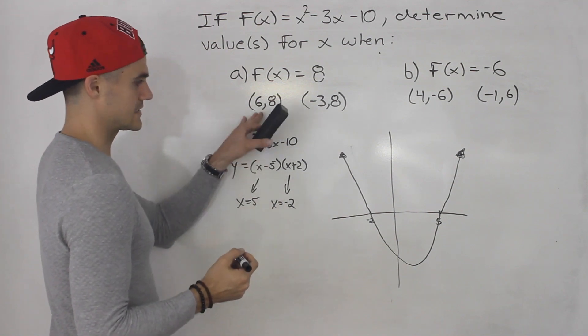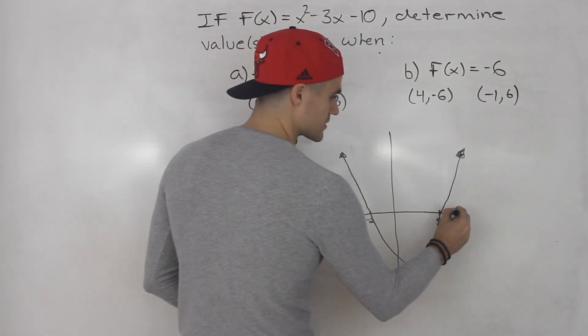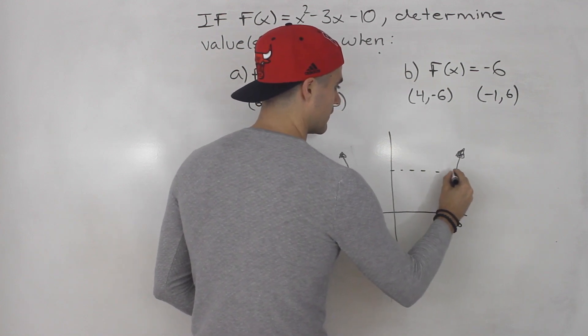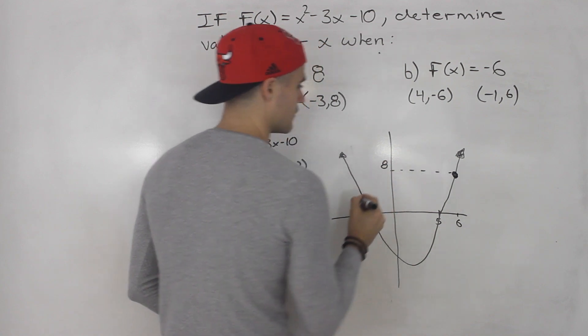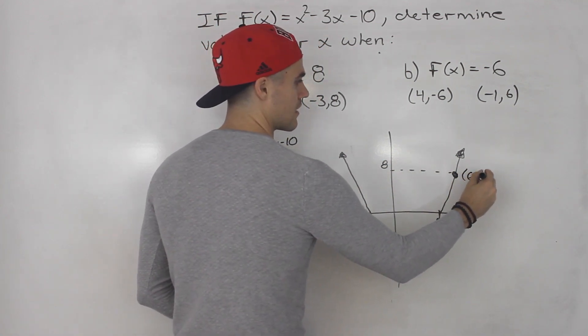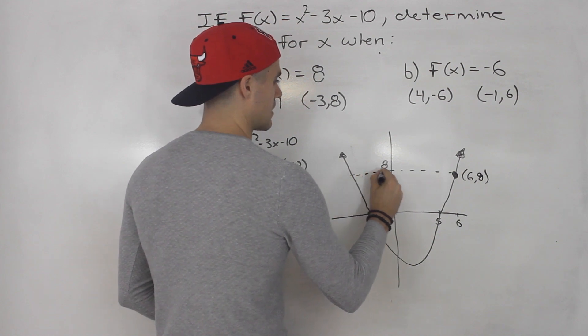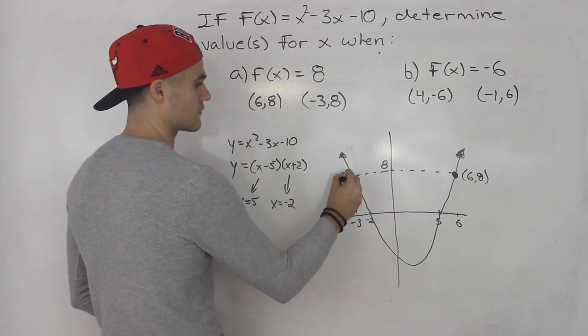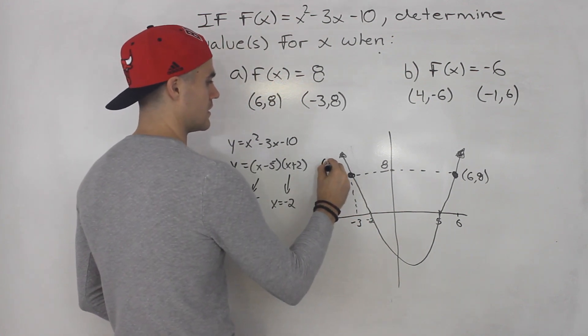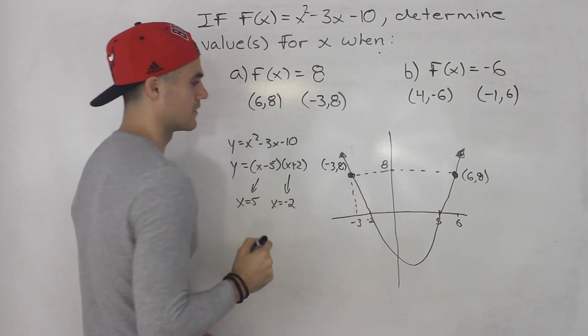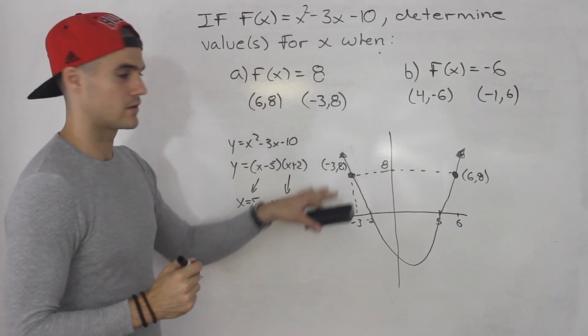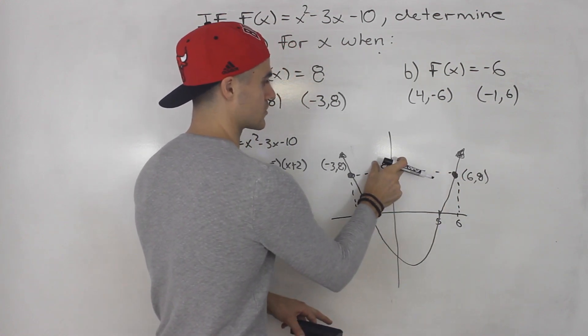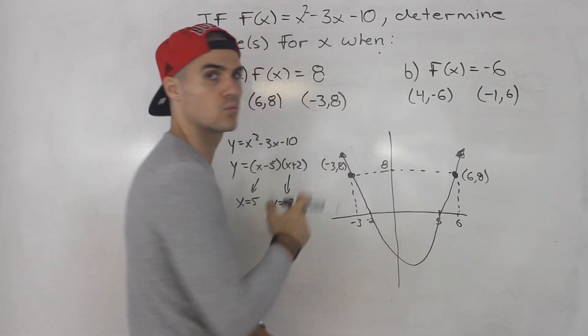So what's happening, (6, 8) is going to be where? An x value of 6 and then a y value of 8. So this is (6, 8) there. And then over here a y value of 8 is also going to happen at an x value of -3. So this coordinate here is (-3, 8). So that's how you could show it visually. We have the x coordinates that we solved for and then the corresponding y coordinate that we were given.